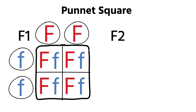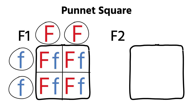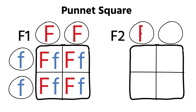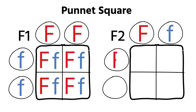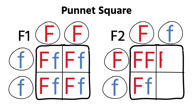For the F2 generation Punnett square, because the F1 generation were all heterozygous they can produce either a dominant or a recessive gamete. When we combine all the possible gamete combinations we get a homozygous dominant, two heterozygous, and a homozygous recessive — giving a one to two to one genotype ratio or a three to one phenotypic ratio, just as before, in much less space.